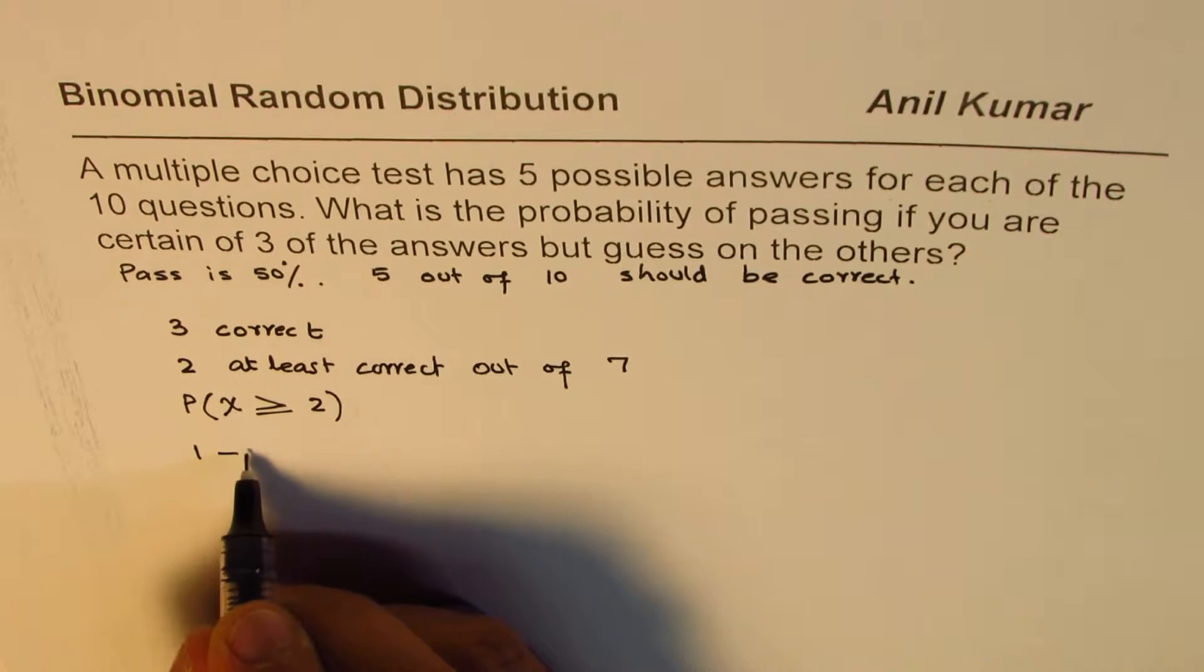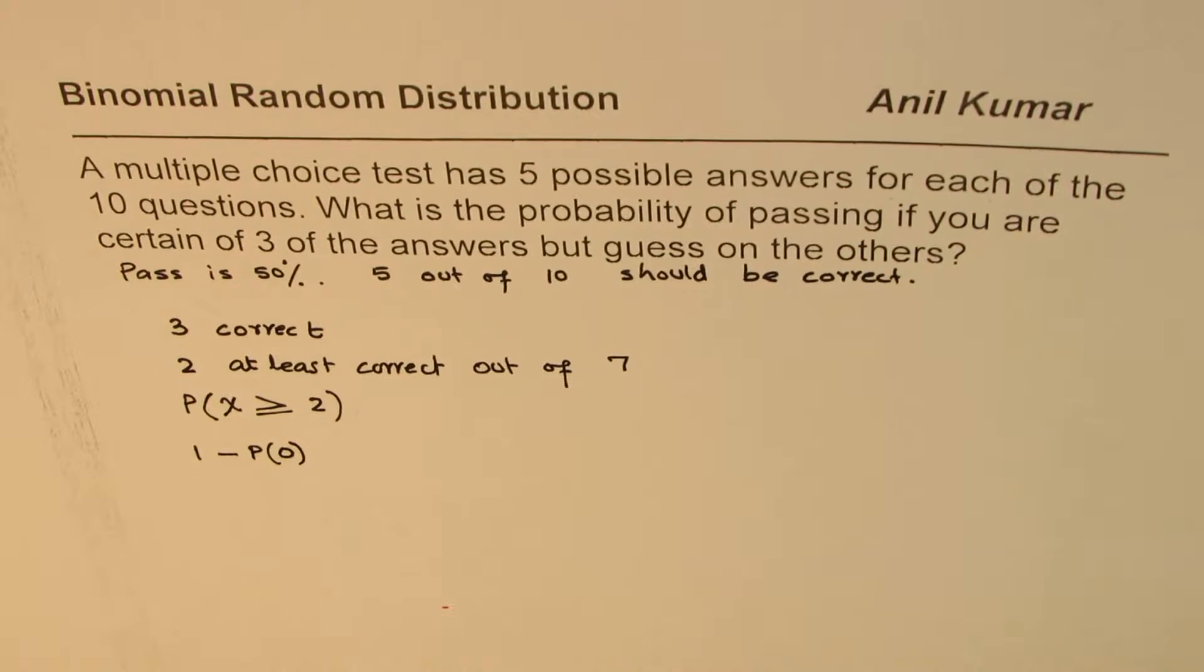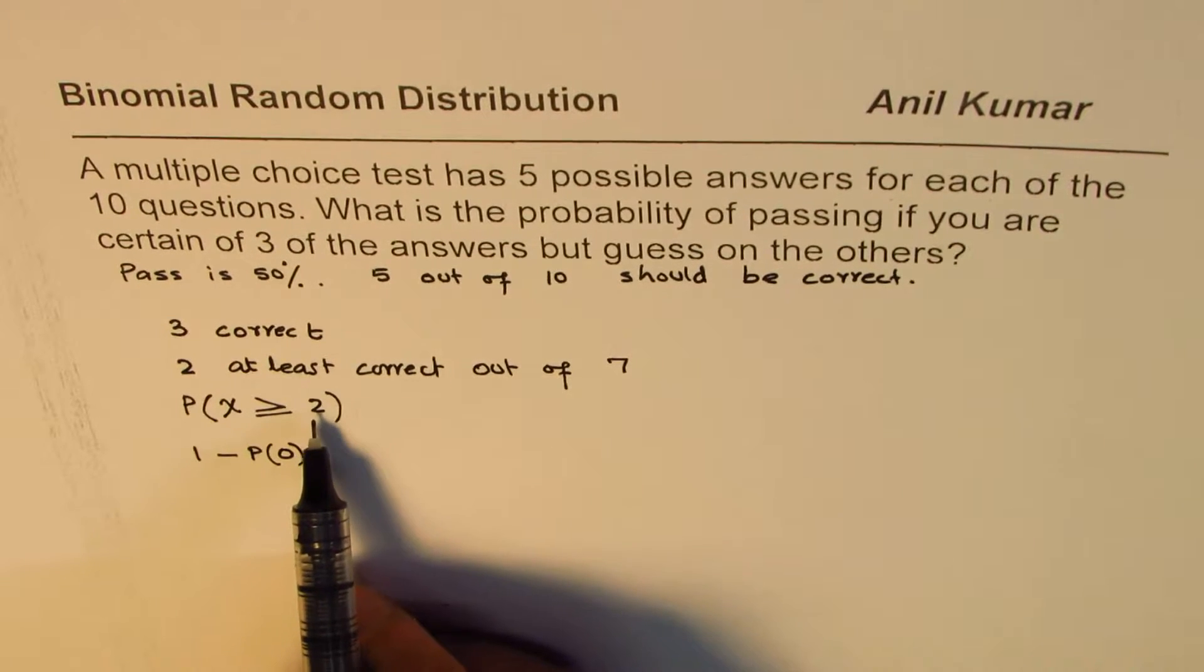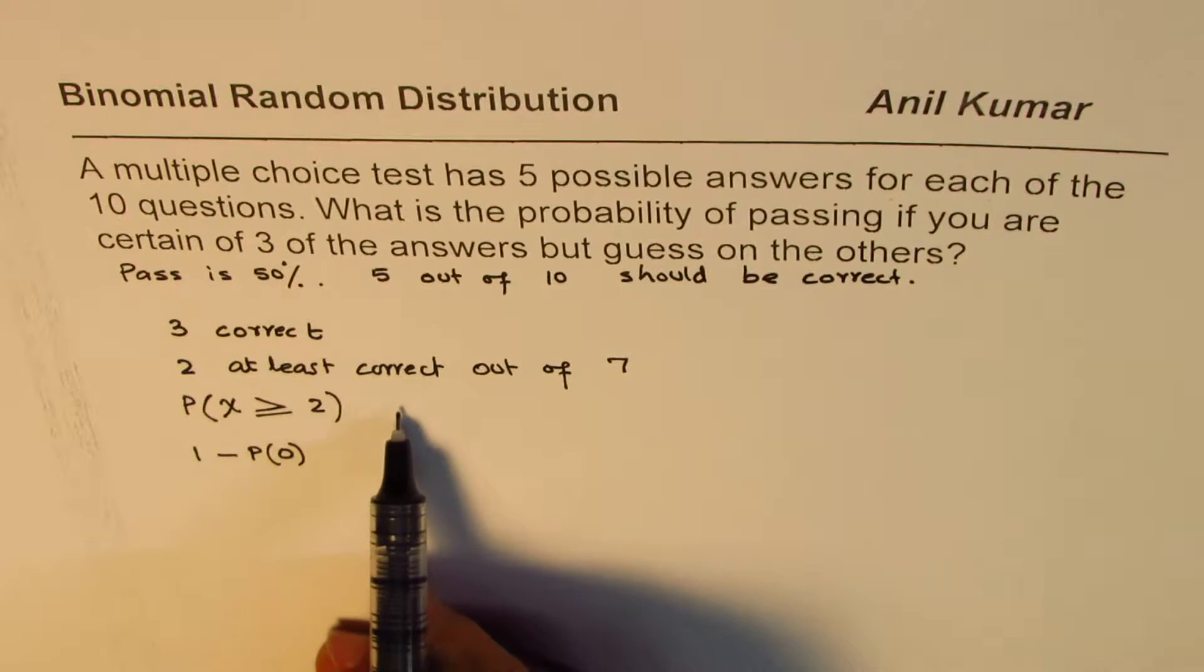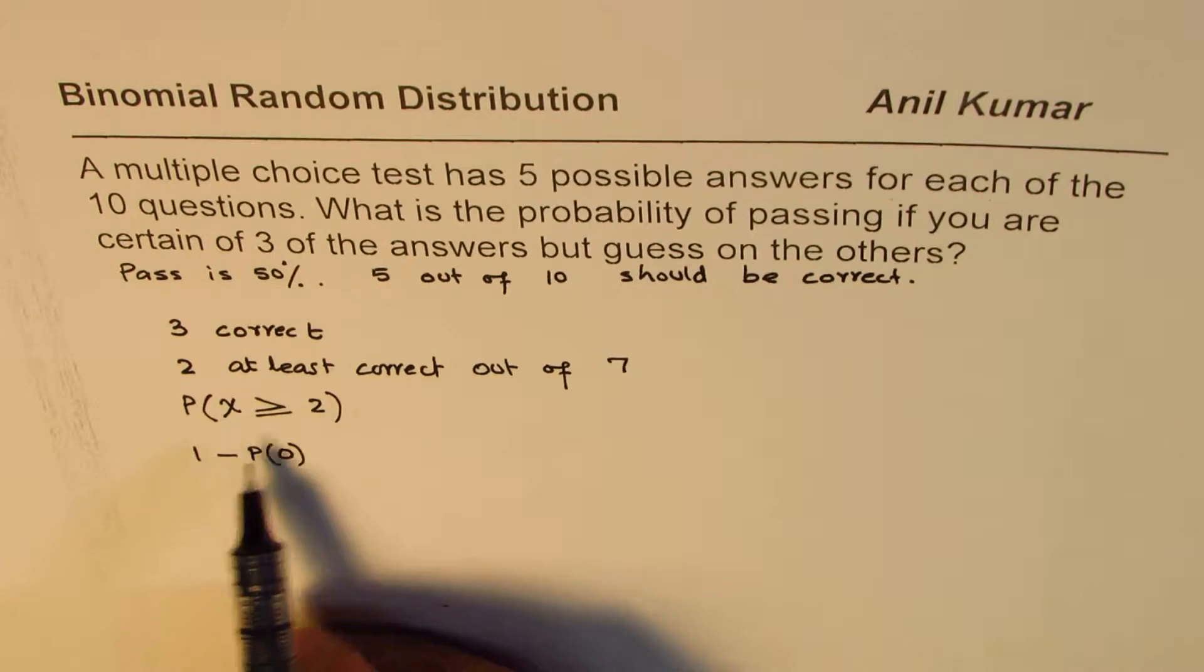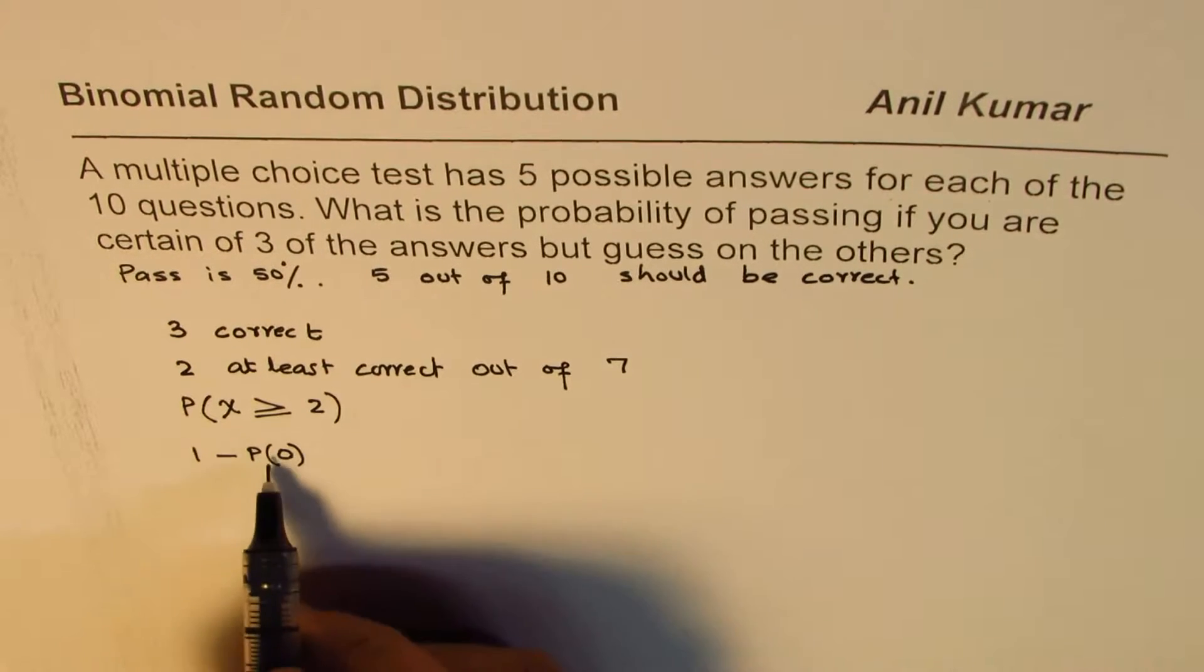We can look into a different side which is using complementary. That is 1 minus probability when we could do 2 mistakes now. So that means we want 2 correct, 3 correct, 4 correct, 5 correct, 6 correct, or 7 correct. But we can now take away the probabilities for how many mistakes we can do. We can do no correct at all.